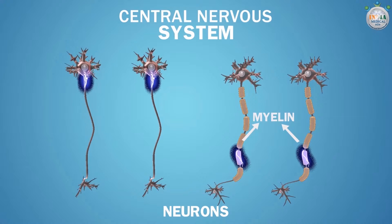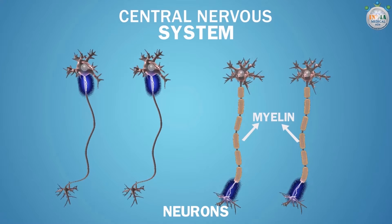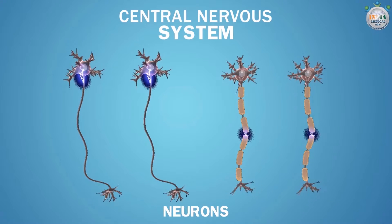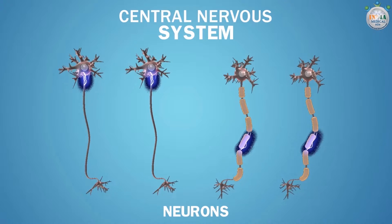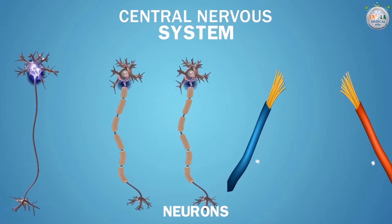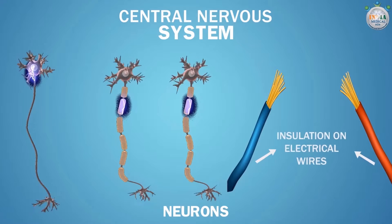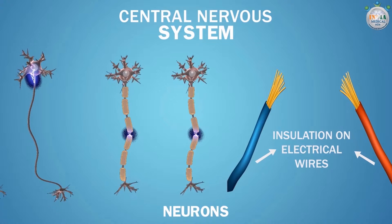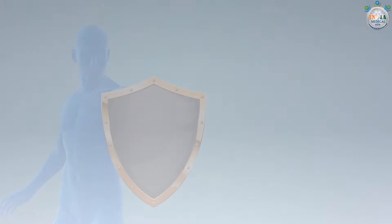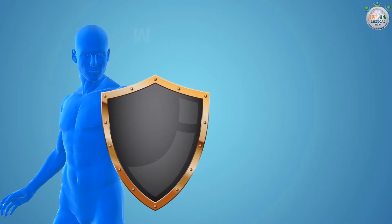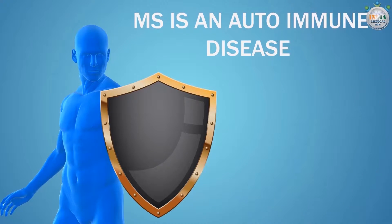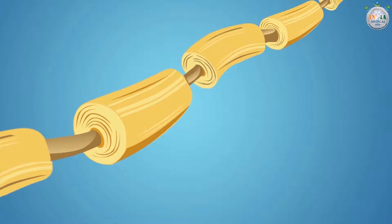Myelin surrounds and protects nerve fibers of the brain and spinal cord in the same way as insulation protects electrical wires. What causes multiple sclerosis? Multiple sclerosis is an autoimmune disease, and when it occurs,